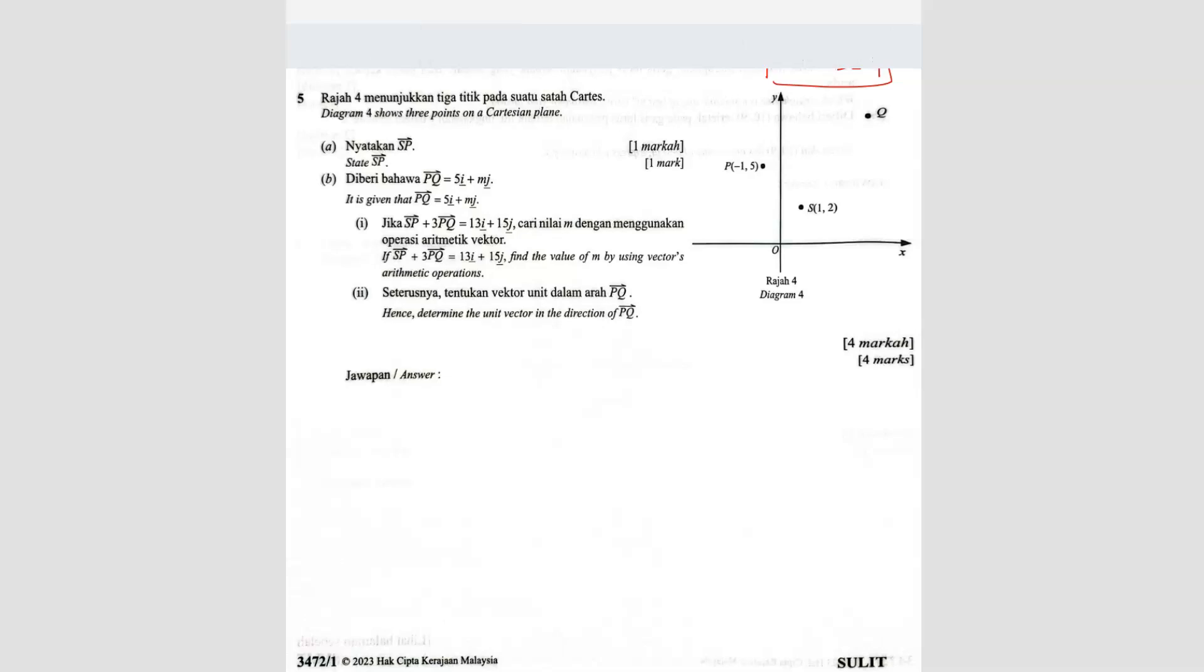Question number 5. Diagram 4 shows 3 points on the Cartesian plane. Question A is state SP. So SP is from here, so we're going from SP, this direction.